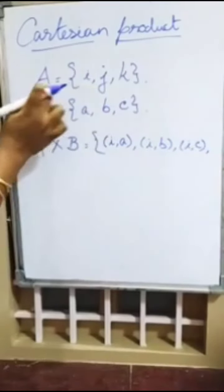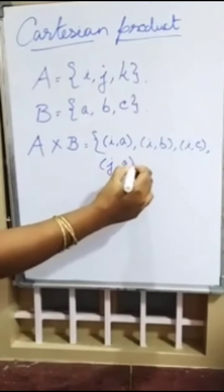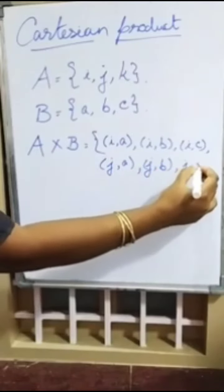Next, you take the second element in the A set and combine with all the elements in B. That is J comma a, J comma b, J comma c.